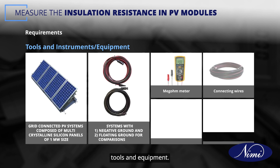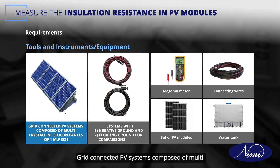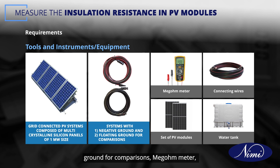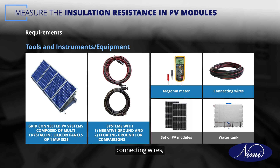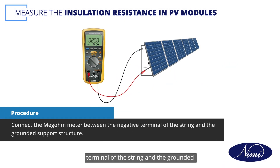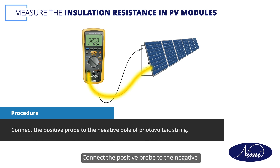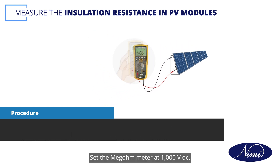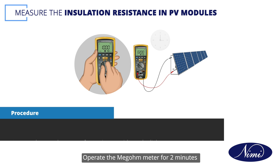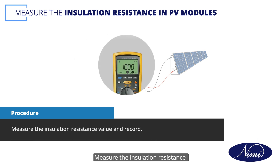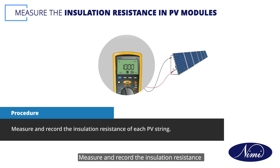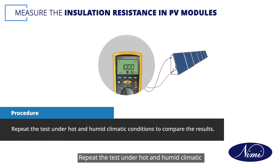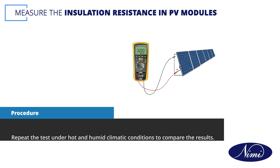To measure insulation resistance in PV modules, ensure you have all the following tools and equipment: grid-connected PV systems composed of multi-crystalline silicon panels of 1 MW size, systems with negative ground and floating ground for comparison, a Megohmmeter, connecting wires, a set of PV modules, and a water tank. Connect the Megohmmeter between the negative terminal of the string and the grounded support structure as shown in the figure. Connect the positive probe to the negative pole of the photovoltaic string, and the negative probe to the support structure or ground cable. Set the Megohmmeter to 1000V DC and operate for 2 minutes without light. Measure and record the insulation resistance value for each PV string. Repeat the test under hot and humid climatic conditions to compare the results, and record the observations.